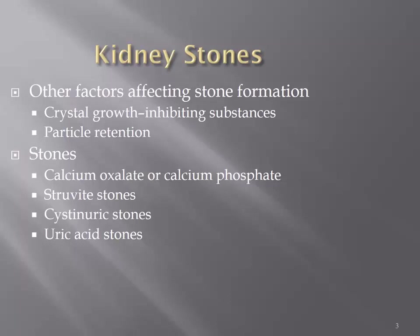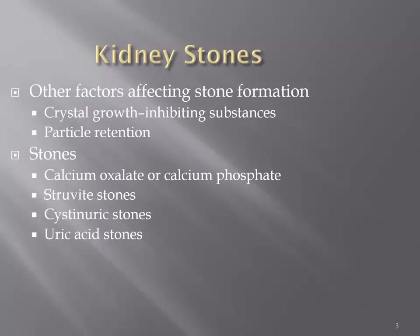Cysteine stones are related to abnormal excretion of amino acids — not only cysteine, but also lysine and arginine. These are abnormal conditions related to amino acid excess. Prevention involves increasing fluid intake and increasing the pH of urine above 7.5, creating a basic environment that is not beneficial to these stones.